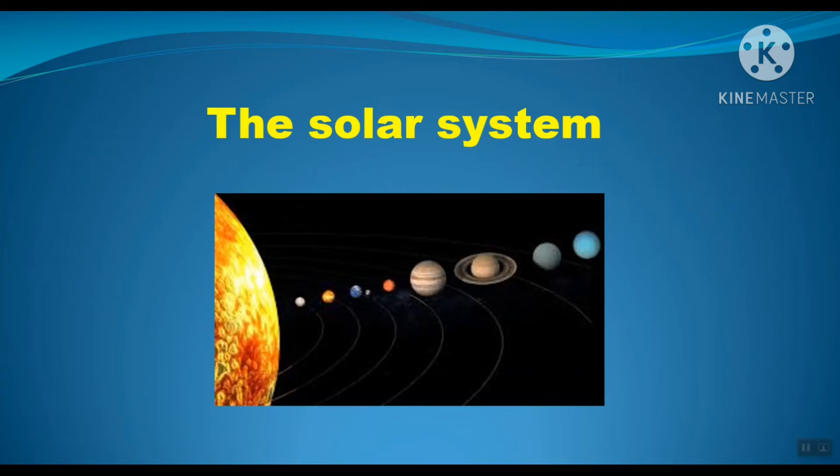Every planet has its own orbit around the sun. And the orbit is the pathway where the planets move.